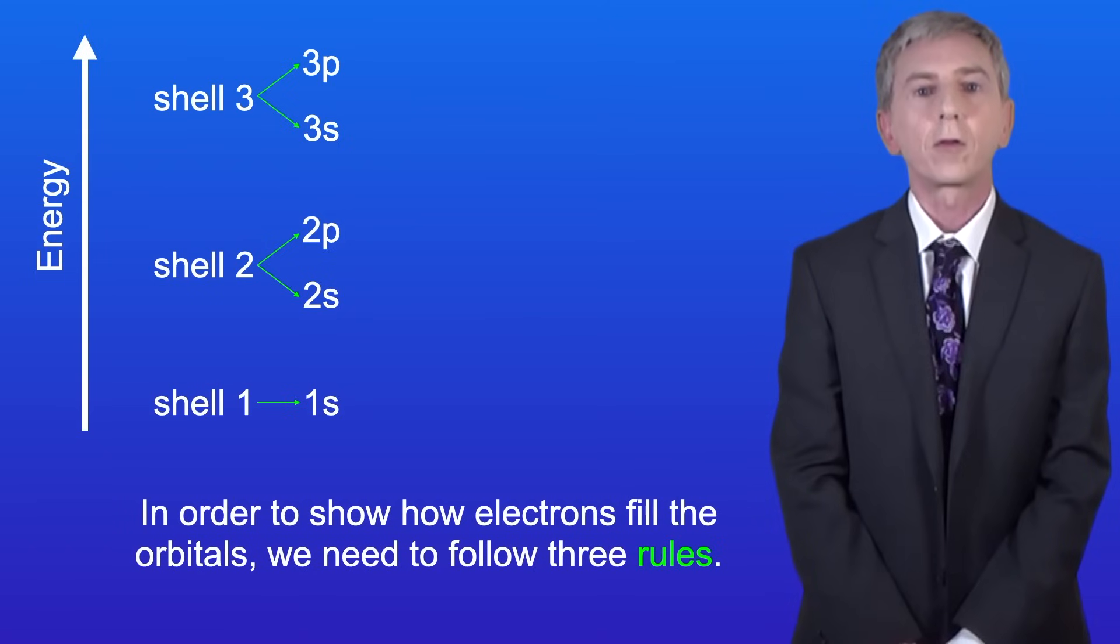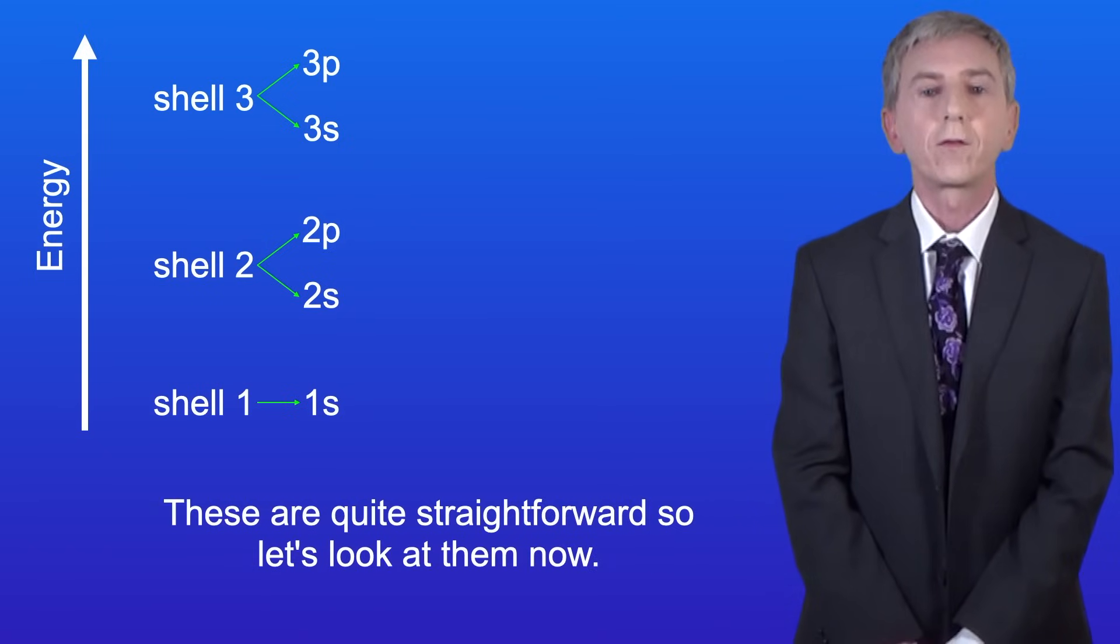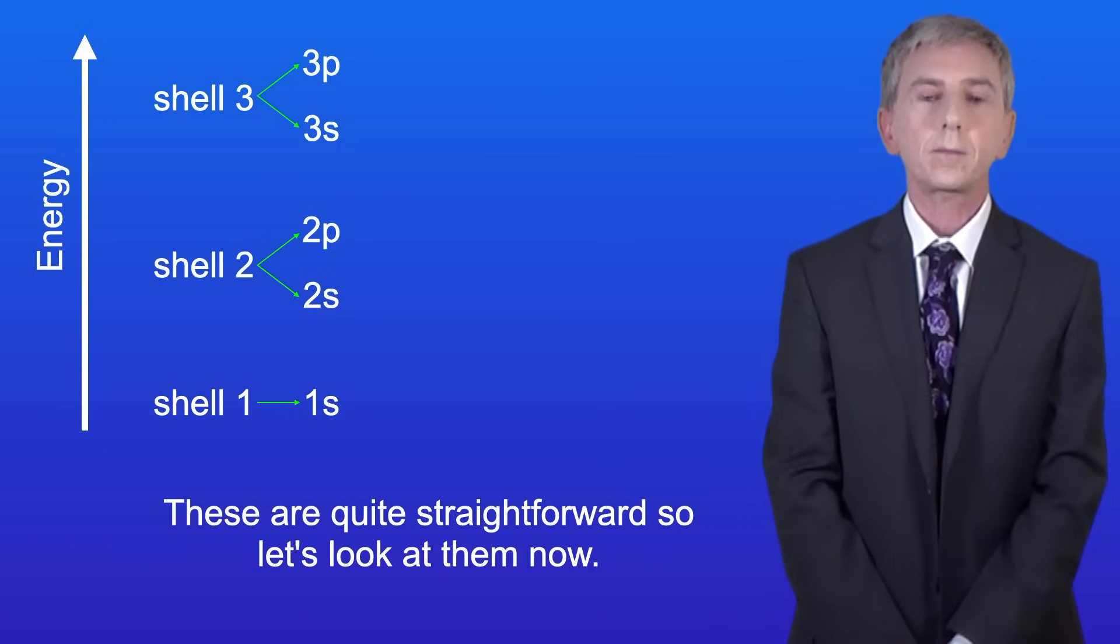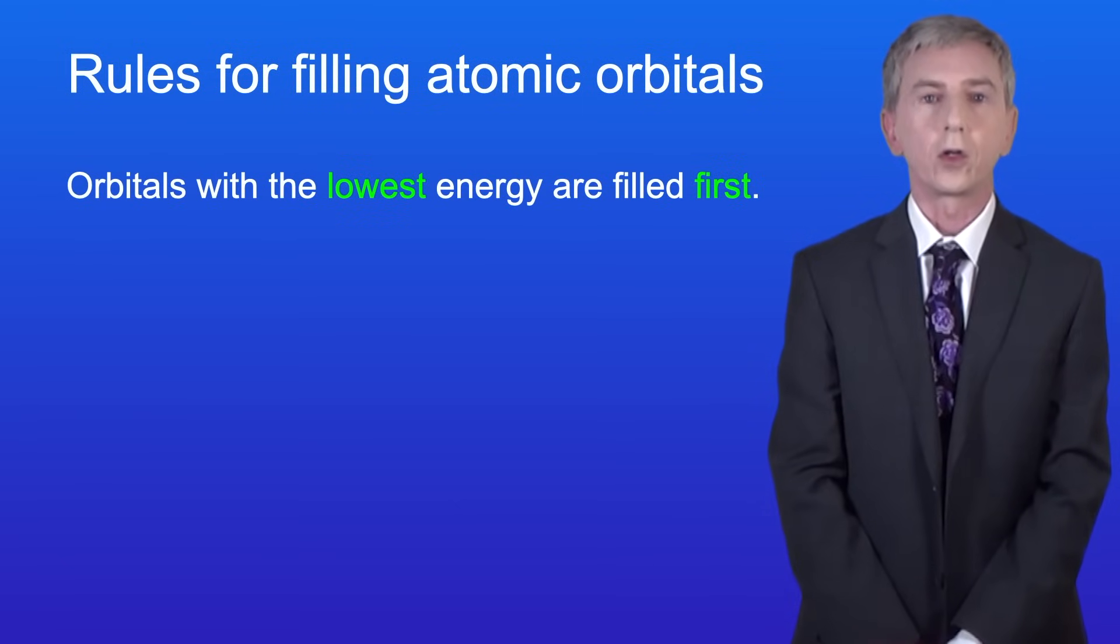Now in order to show how electrons fill the orbitals, we need to follow three rules. These are quite straightforward, so let's look at them now. Firstly, orbitals with the lowest energy are filled first.